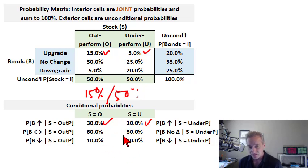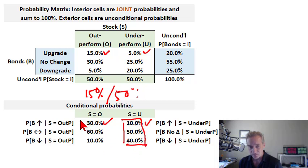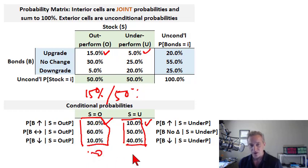These conditional probabilities sum to 100%, and similarly the other set of conditional probabilities also sums to 100%. So we have joint probabilities inside the matrix, unconditional probabilities at the margin, and conditional probabilities inferred by dividing a joint probability by the appropriate unconditional probability. I hope that's a helpful summary.